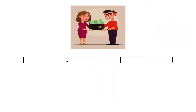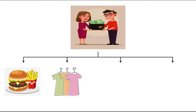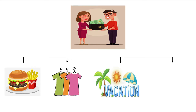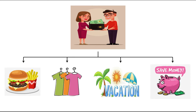Now consider parents deciding how to spend their family income. They can buy food, clothing, a family vacation, or they can save some of their income. When they choose to spend an extra dollar on one of these goods, they have one less dollar to spend on some other good.